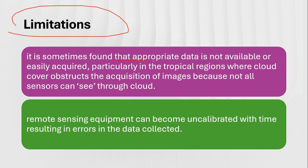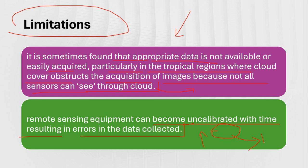The limitations of remote sensing: sometimes appropriate data is not available or easily acquired. Particularly in tropical regions, cloud cover obstructs image acquisition because not all sensors can see through clouds — cloud-free images can be captured only by a few satellites. Also, remote sensing equipment can become uncalibrated over time, resulting in errors in data collected. When a sensor has been in space for a long time it can provide uncalibrated images with some errors.